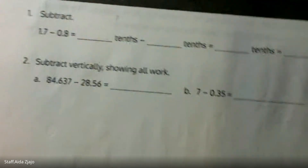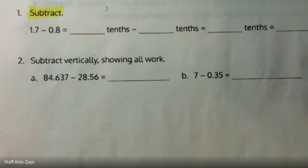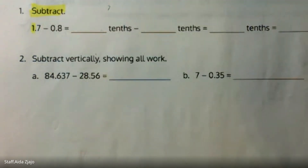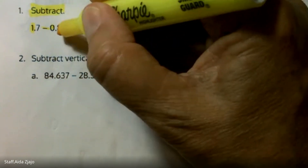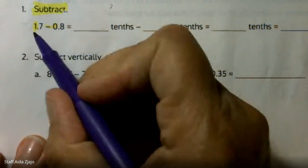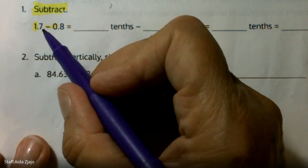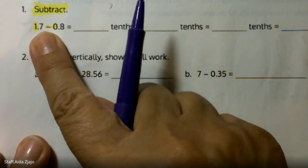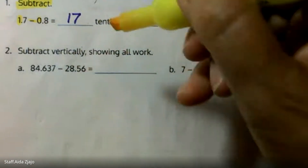Subtract means to break apart and take away. So I have one and seven tenths minus zero holes and eight tenths. In these units, one whole can be divided into 10 pieces and you will have tenths. So together, one whole will have 10 tenths, and seven tenths makes 17 tenths.